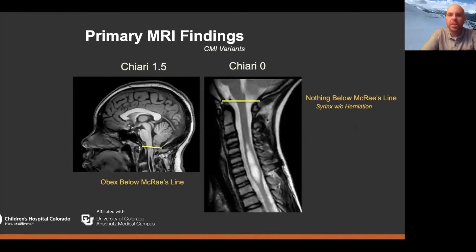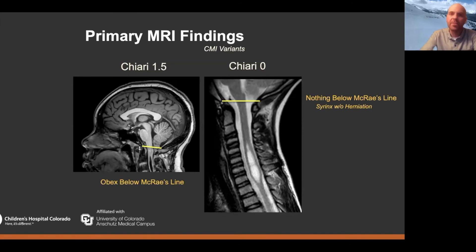I'll briefly mention Chiari 1.5 and Chiari 0, because you'll see them come up. We won't talk about them a lot as individual entities, but the processes of how they're managed are very similar to Chiari 1. The distinction between Chiari 1 and 1.5 is really the position of the obex. Chiari 1 is technically defined by herniation of the cerebellar tonsils five millimeters below McRae's line — the line joining the basion to the opisthion at the foramen magnum. With Chiari 1.5, the obex itself is actually positioned below that line, representing a shifting of the brainstem downward. Sometimes the term Chiari 1.5 is blended in with the term complex Chiari, which can be a challenge due to imprecision in language — Chiari 1.5 is specifically defined by that brainstem difference.